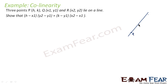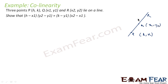This is P, this is Q, and this is R. So we have three points P, Q, R. P has coordinates (H, K), Q has coordinates (X1, Y1), and R has coordinates (X2, Y2).